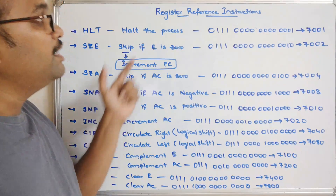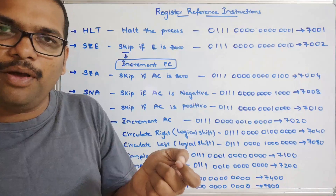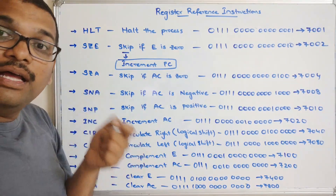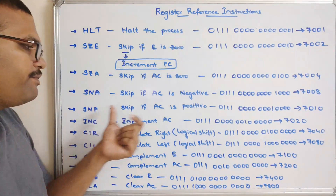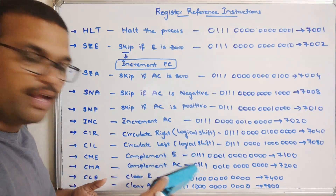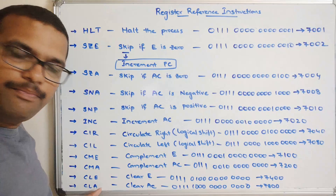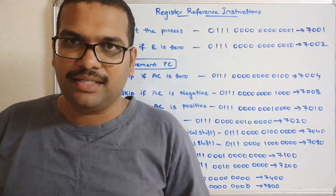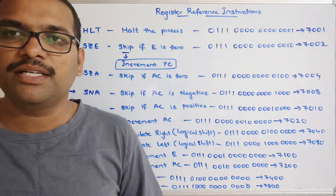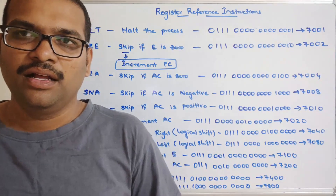So these are the register reference instructions: HLT, SZE — skip if E is 0 where E is the extended flip-flop and skip means incrementing the program counter, SZA — skip if accumulator is 0, SNA — skip if accumulator value is negative, SNP — skip if accumulator value is positive, INC — increment the accumulator, CIR — logical shift right, CIL — logical shift left, CME — complement the extended flip-flop, CMA — complement the accumulator, CLE — clear the extended flip-flop, and CLA — clear the accumulator. Hope you understood. Feel free to post your doubts in the comment section. If you enjoyed the session, like, share, and subscribe. Thank you very much.